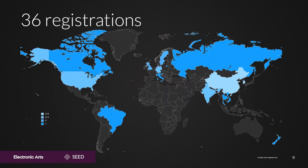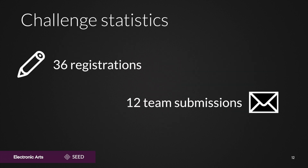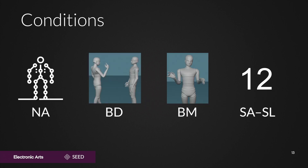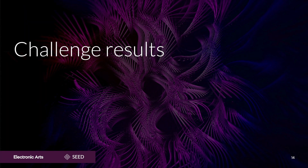The challenge was run in the summer of 2023. 36 teams from all over the world registered for the challenge. Of those, 12 teams submitted their systems for evaluation. The evaluation featured four types of motion. The first was natural motion capture from the speakers in our dataset, labeled NA. The second and third were previously existing systems used as baselines. BD is a dyadic baseline that takes both conversation parties into account. BM is a monadic baseline, which considers only the agent's own speech and ignores the conversation partner when generating motion. Finally, the systems submitted by participating teams, abbreviated as SA through SL.